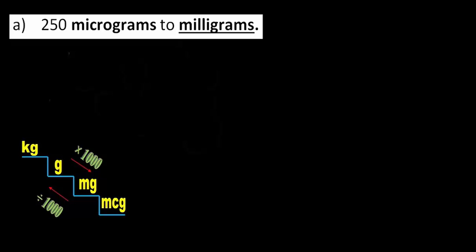Now I've got to think about what direction I want to go in. Am I multiplying or dividing by a thousand? I always use a visualization like this to help me where I have my standard staircase with kilograms on the top and then it goes down to grams, milligrams and micrograms. And you can see here that going from micrograms to milligrams I will need to divide by a thousand.